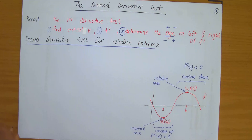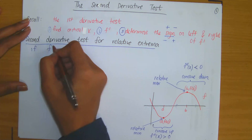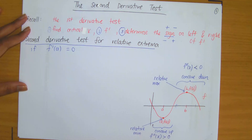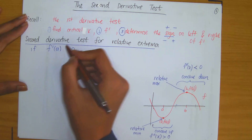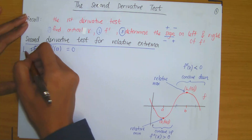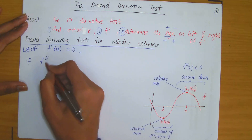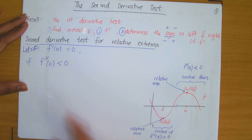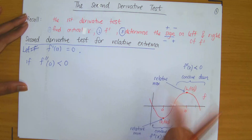Based on this observation, that is how the second derivative test has come about. The second derivative test tells you the following: if you have a critical value where f' at a equals 0, then we can test x equals a to determine if there is a relative extrema at that point. If the second derivative evaluated at a is negative — meaning the graph is concave down — then we have a relative maximum at a.